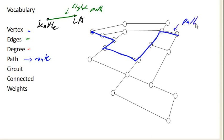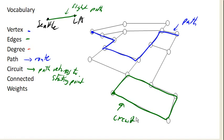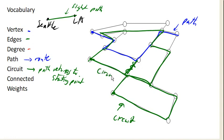A circuit, on the other hand, is a path that returns to the starting point. So the circuit has to be looped around. So if I start here, this would be a circuit. Likewise, we could start here and follow a route back to the start, and we've got ourselves another circuit. So it's possible to have multiple circuits on a graph.